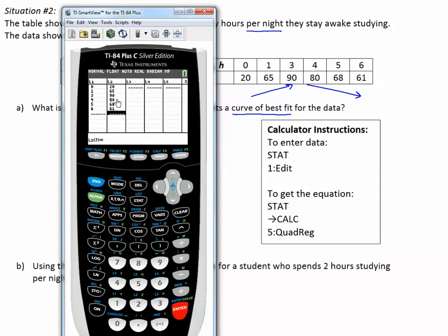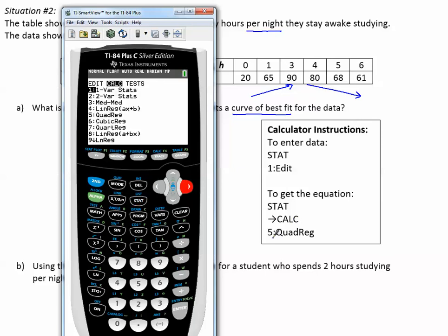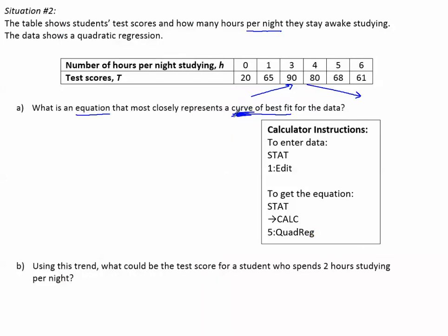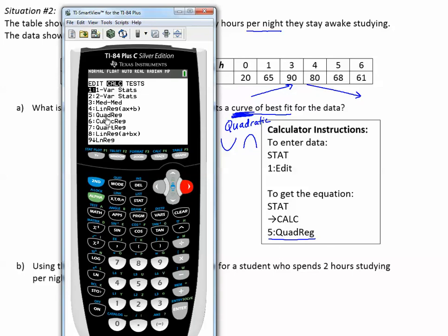We'll double check that we've entered correctly, looks good. Now we get the equation by going to STAT, over to the right for CALC, CALCULATE. This time I want a quadratic regression. Remember when they say curve of best fit, it's going to be because it's a quadratic function. Curving is for a quadratic function for us, so we want quadratic regression. Choice five is quadratic regression, choose five.